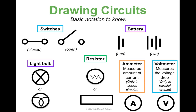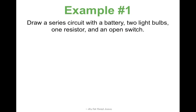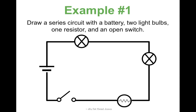The easiest way to learn this is just to practice. For example: draw a series circuit with a battery, two light bulbs, one resistor, and an open switch. Anytime you see a series circuit, just start by drawing your rectangle, then add all the things specified — the order doesn't matter in a series circuit, you just throw it all on there. So: there's my battery, two light bulbs, a resistor, and an open switch.